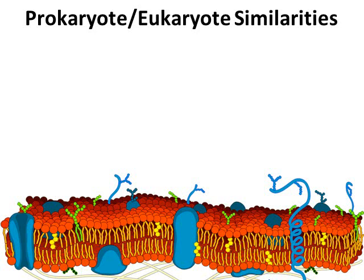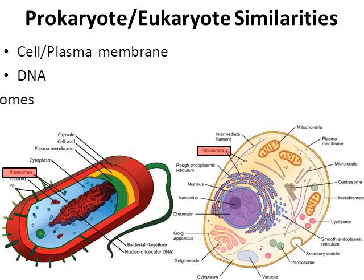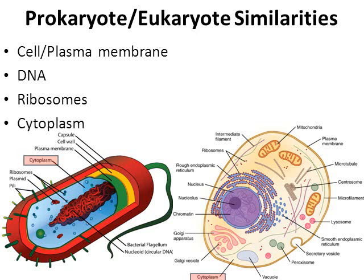What about their similarities? Prokaryotes and eukaryotes each have a cell or plasma membrane that allows materials to come in and out. Each has DNA — the molecule of heredity that passes genetic information from generation to generation. Each has ribosomes; that's because they each need proteins, and building proteins is the job of ribosomes. And each has a fluid interior called the cytoplasm, which is really important because this is where a lot of the chemical reactions that take place within a cell occur.